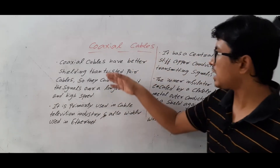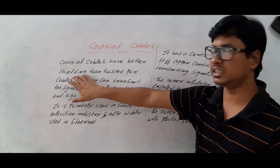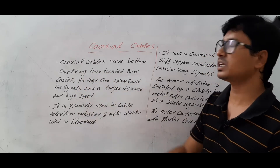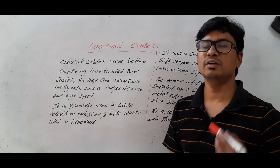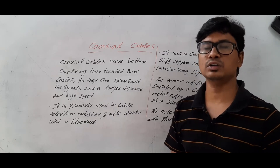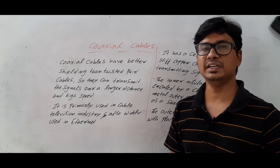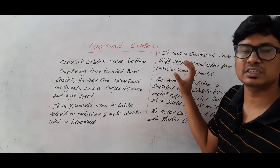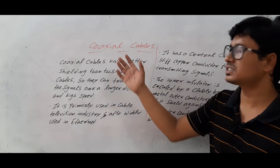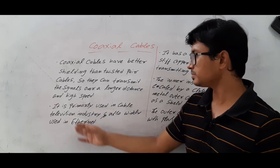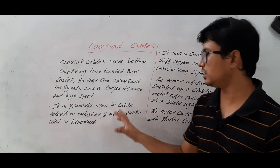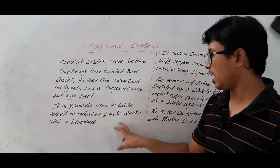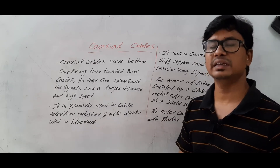The coaxial cables have better shielding than twisted pair cables so that they can transmit the signals for a long distance and also with high data rate. I will discuss why it is more shielded when I discuss the structure of a coaxial cable. It is primarily used in the cable television industry and also widely used in Ethernet.